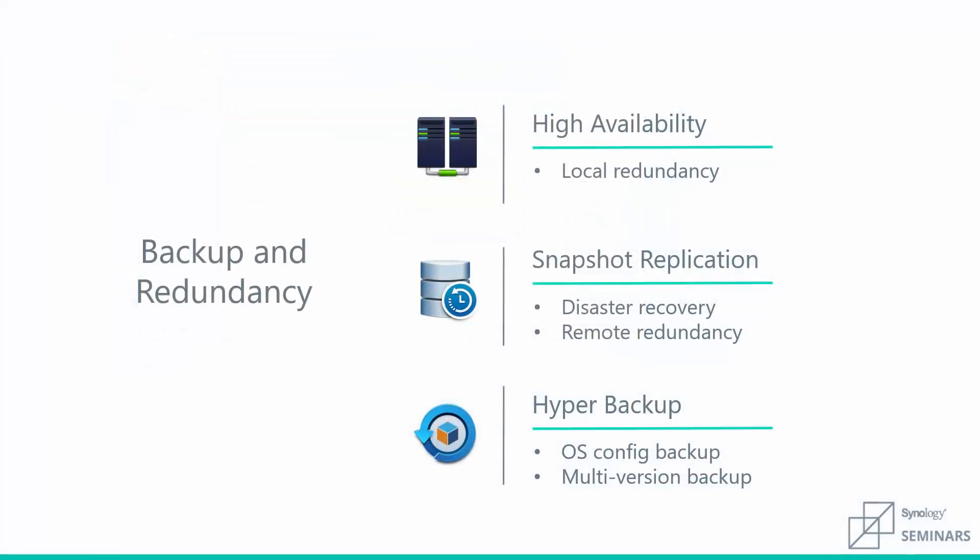This has been a quick look at how we handle backup and redundancy. To quickly touch on everything we talked about today: for local redundancy it's high availability; for disaster recovery and remote redundancy you'll use snapshot replication; and for that multi-version, traditional restorable backup, it's Hyper Backup. All three of these pieces of software should be used together to take advantage of each other's strengths, and all three are absolutely free and ready to be installed right out of the box with Synology.